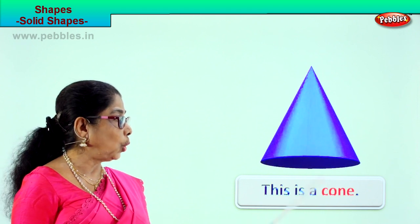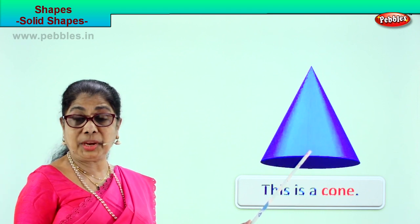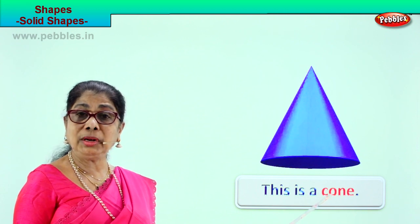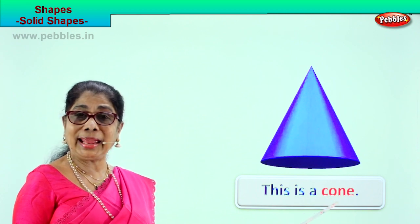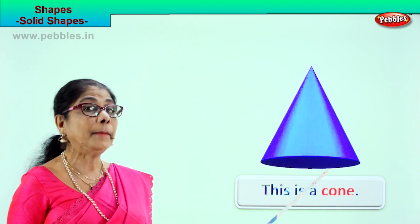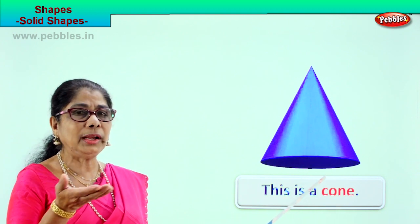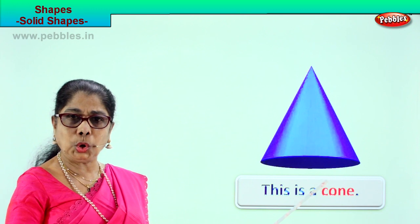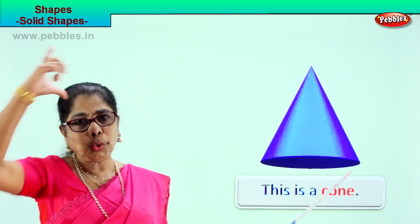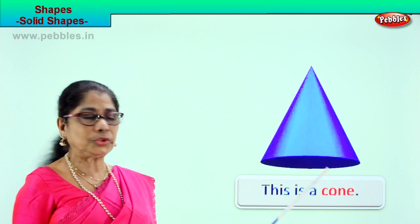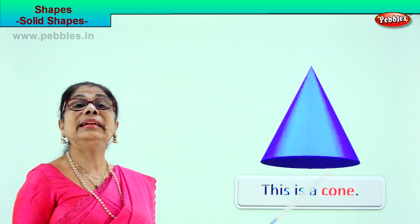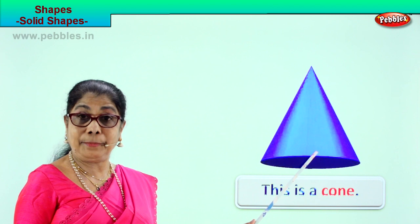This is a cone shape. What shape is this? Cone. Spell cone: C-O-N-E. Your party caps are cone-shaped, but they are not solid because they are not closed. You have seen cone ice cream and cone caps. This is a solid shape — cone.